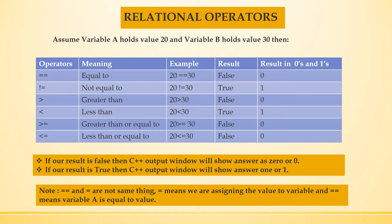Let us understand with the help of an example. I am assigning 20 to variable A and 30 to variable B. In the equal to operator, 20 is equal to 30 — no, so the result is false. And the result in zeros and ones is 0.